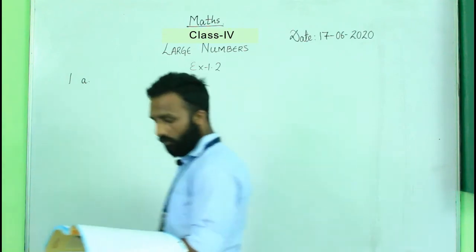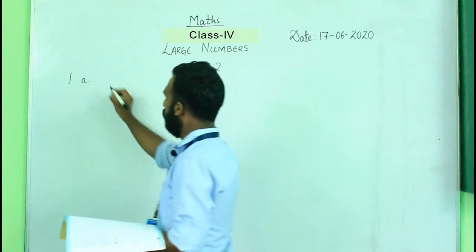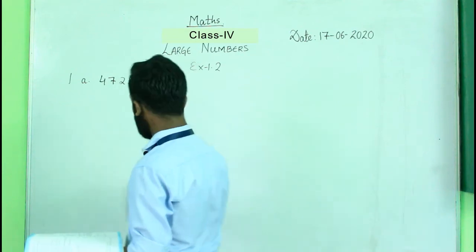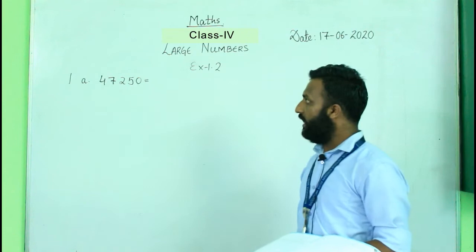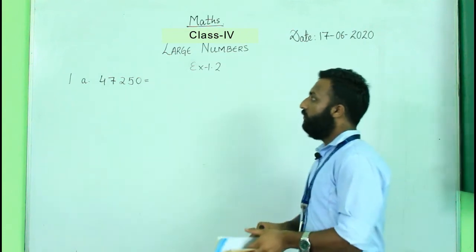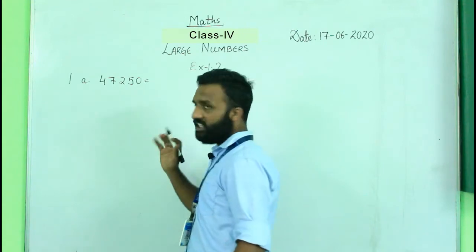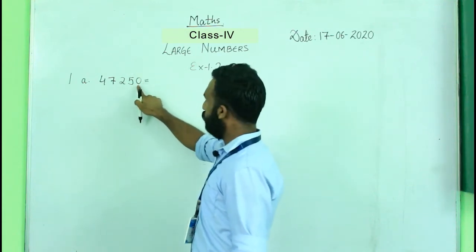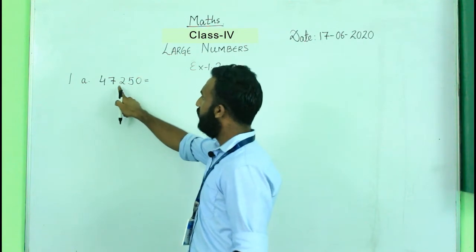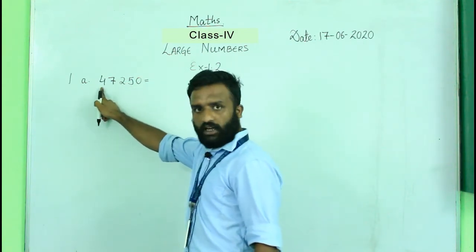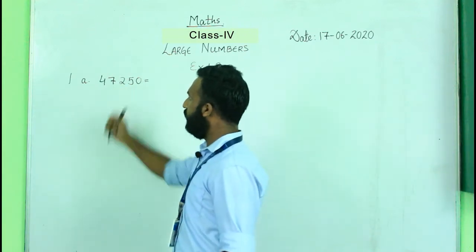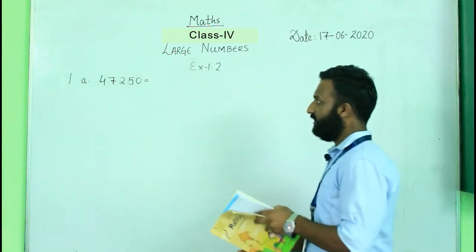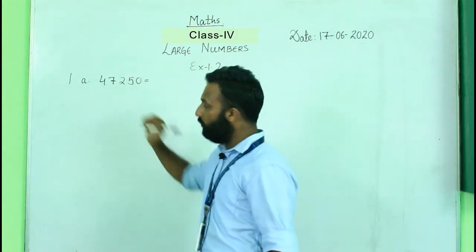From exercise 1.2, let's start with question number 1a. The number we have is 47,250. Before writing the expanded form, we will first look at the place values. Starting from ones, we have ones, tens, hundreds, thousands, and ten thousands. So the number is forty-seven thousand two hundred fifty.